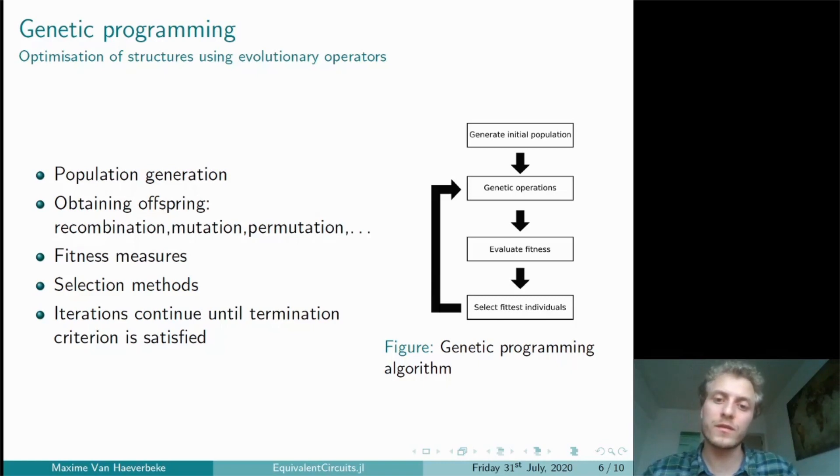The fittest individuals will then be selected to be part of the new population in the next generation. These cycles of genetic operation, fitness evaluation and selection can continue until a stopping criterion is satisfied, for example, a fixed number of iterations.